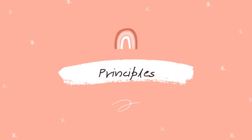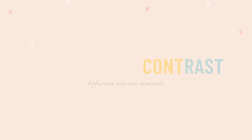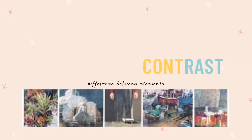Now, let's discuss the principles. Balance is concerned with the visual distribution of weight of the elements in a work of art. Contrast refers to the arrangement of opposite elements and effects. For example, light and dark colors, smooth and rough textures, large and small shapes.